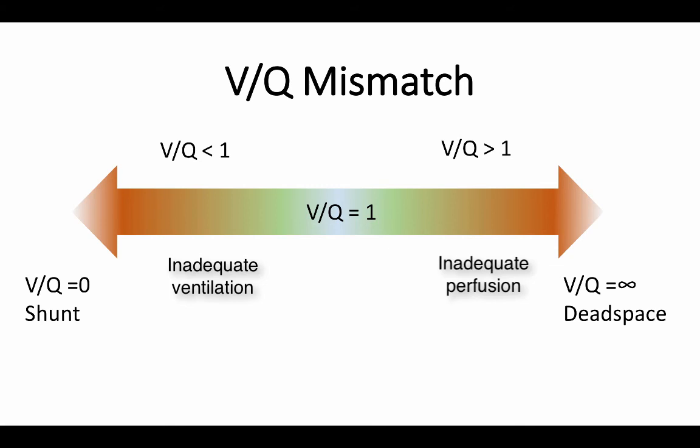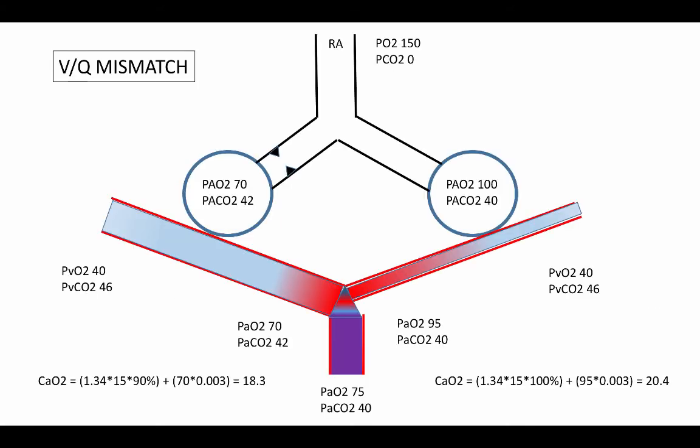There needs to be at least some ventilation and some perfusion for this physiology to occur. We can use the simple two-alveolar model to understand VQ mismatch as well. On the right side, we have an area of normal ventilation but reduced perfusion, so a VQ ratio of greater than 1. And on the left side, the opposite. Perfusion is intact, but ventilation is reduced, so a VQ ratio of less than 1.